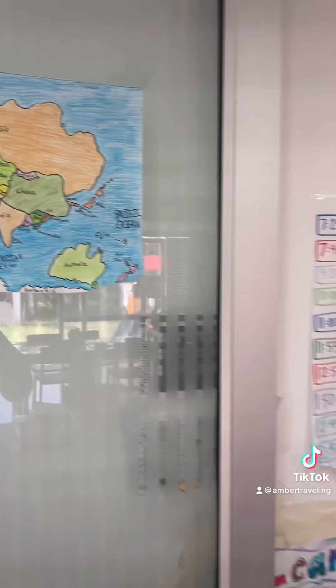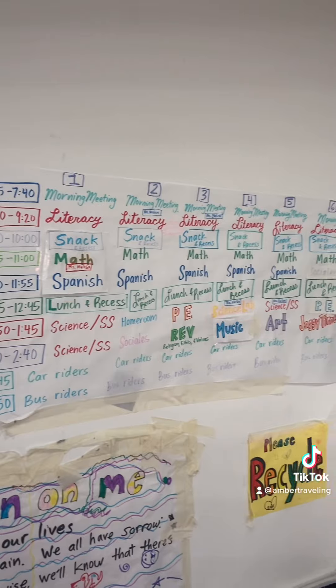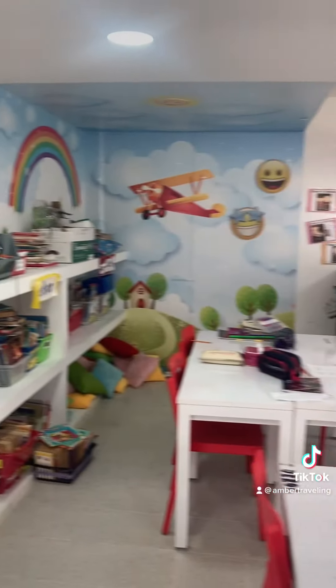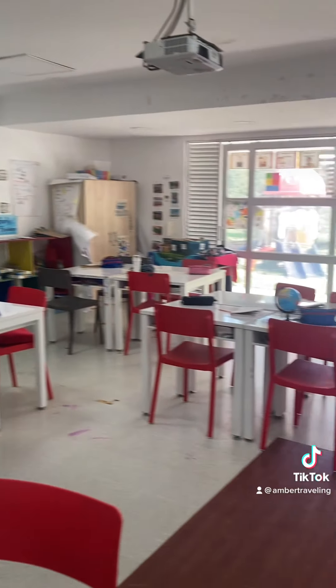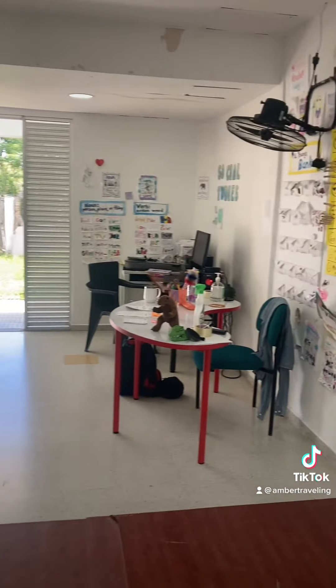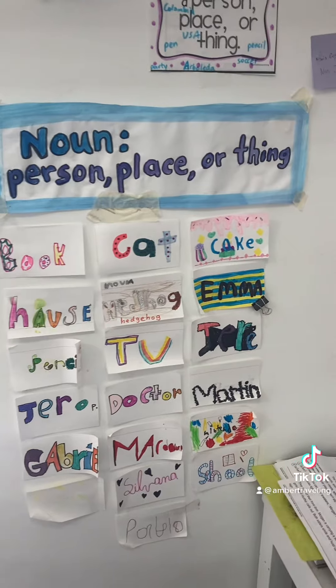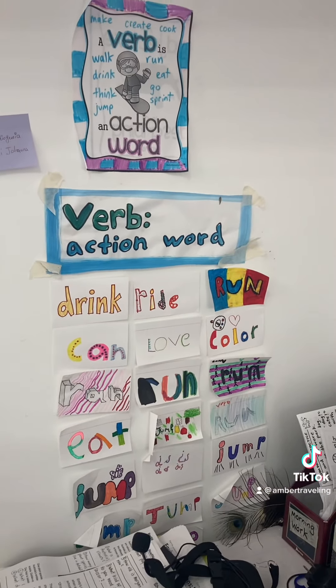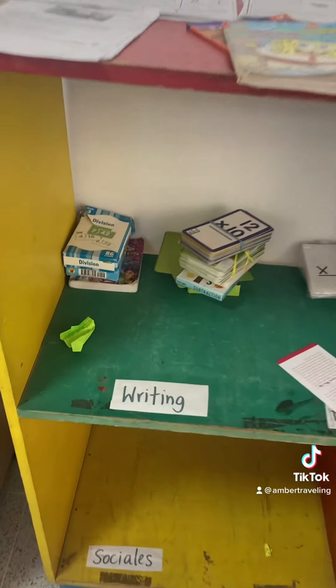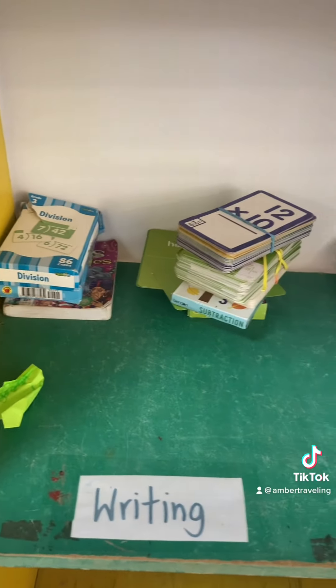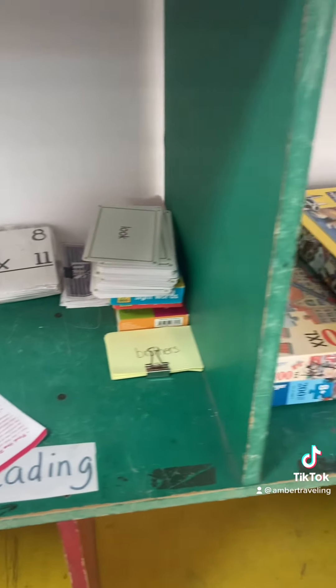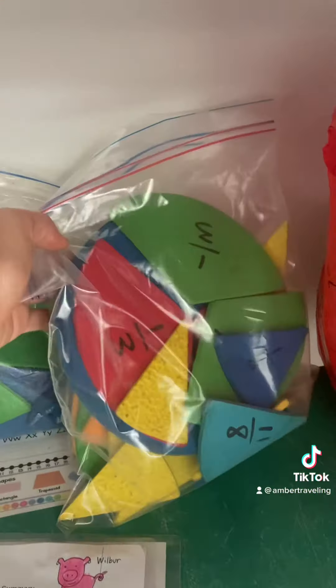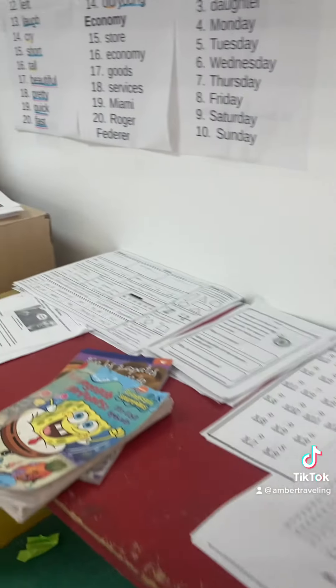Here is a map that one student drew in her free time on the weekend — I'm so proud of her — when we were studying maps. Here's our schedule for the week. This is my third grade classroom in Colombia. Over here we have some examples of nouns and verbs that the students made. Over here are early finisher activities: flash cards for math and phonics, puzzles, blocks, fraction manipulatives, and tons of papers they can do if they want to.